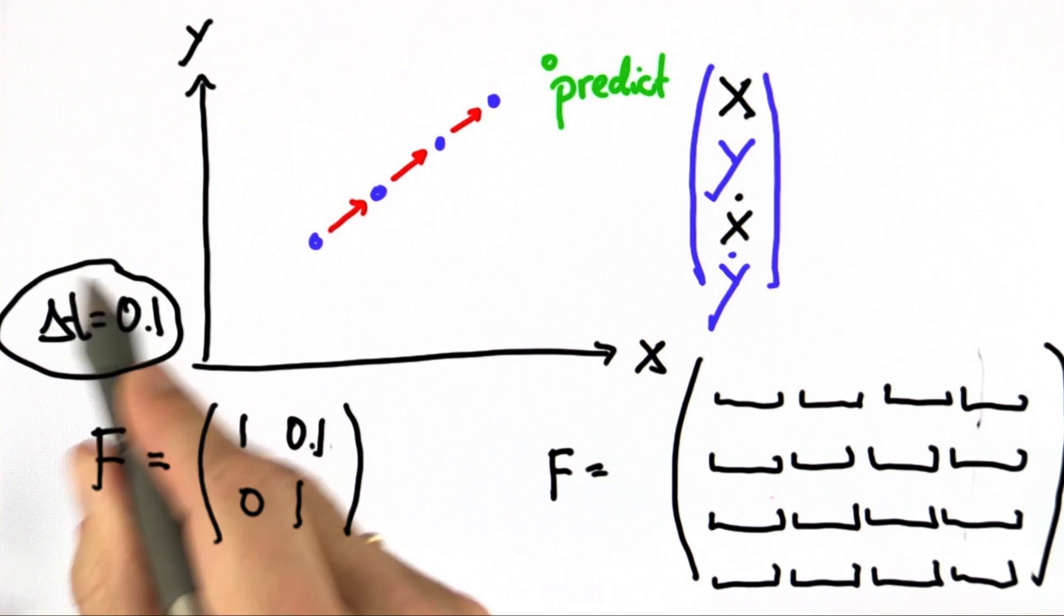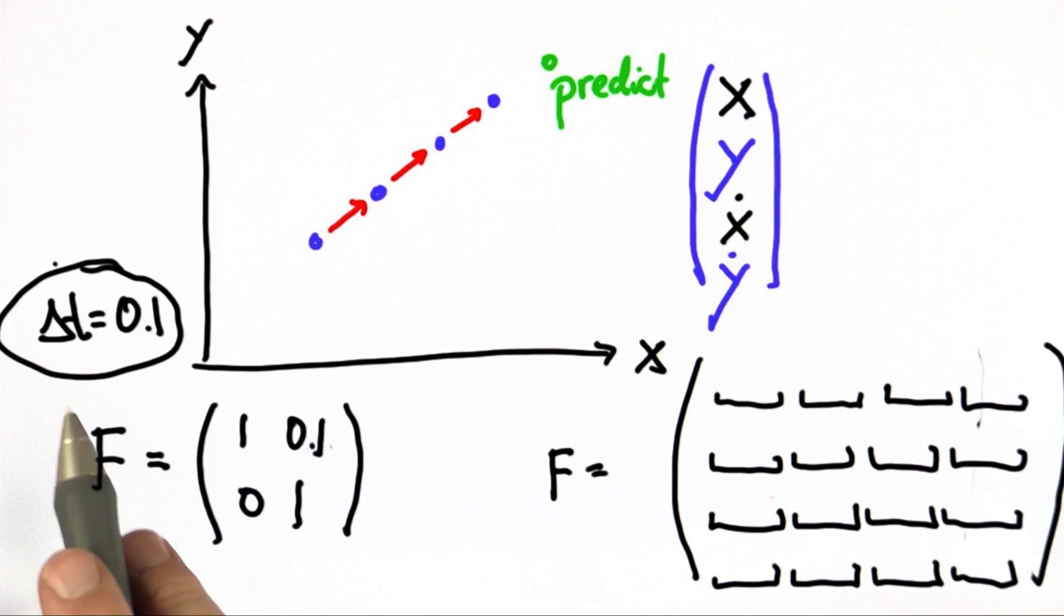Again, please assume that delta t equals 0.1. And don't write delta t, write 0.1.